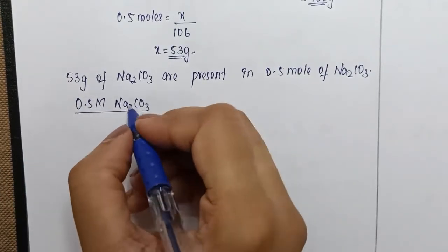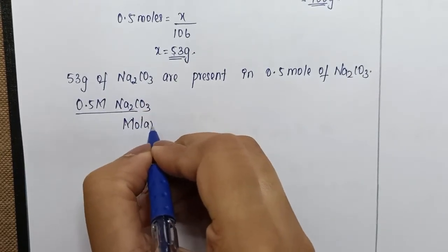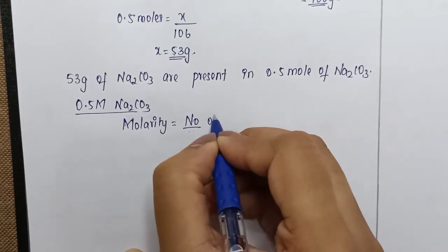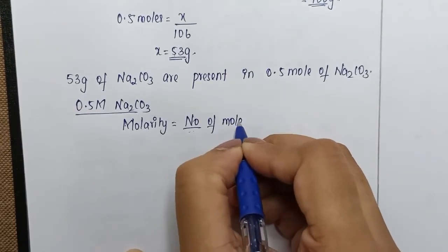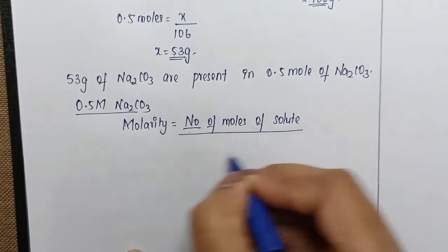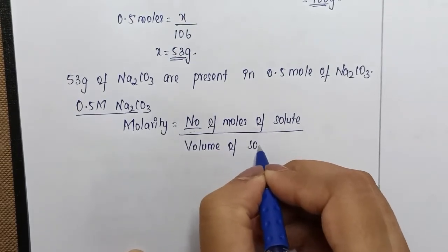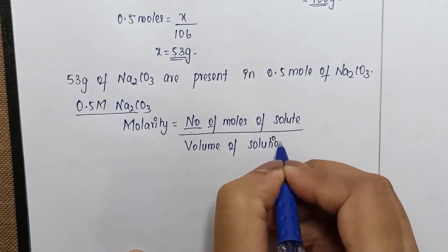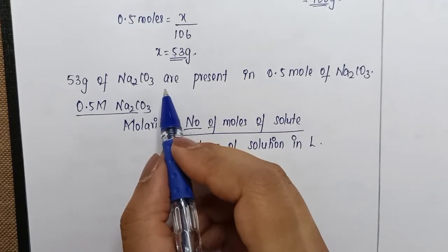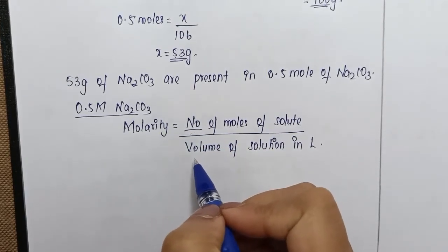In this case, I'm going to talk in terms of molarity because there's a concentration term. Molarity is equal to number of moles of solute divided by volume of solution in liter. That is the formula for the concentration given to us.